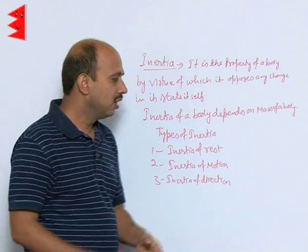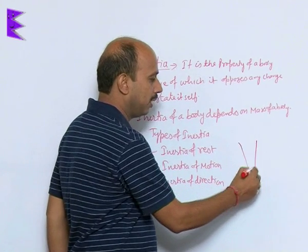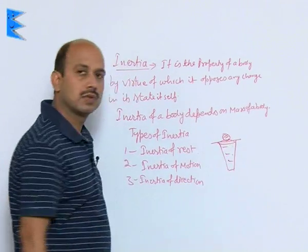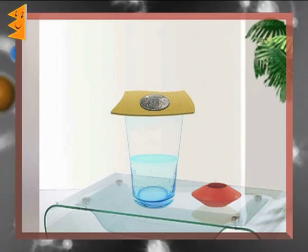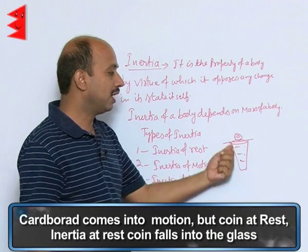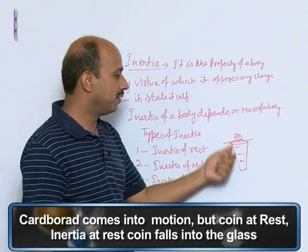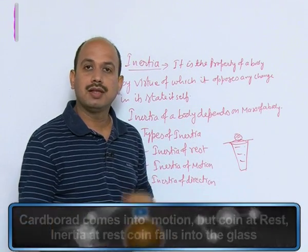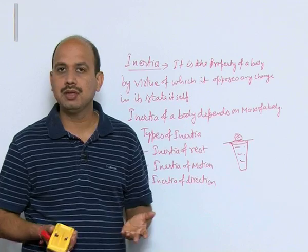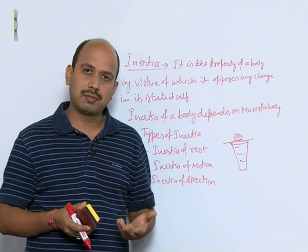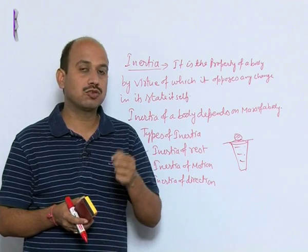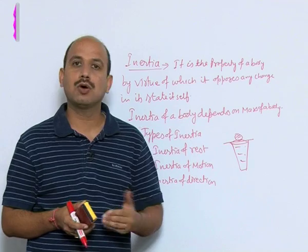You can do these simple activities yourself. Suppose you take a glass tumbler filled with water, place a cardboard on top, and place a coin over it. If you pull the cardboard very fast, the coin will fall into the water. The cardboard comes into motion, but the coin tries to remain at rest due to inertia of rest. Another example: if you shake your shirt or carpet, dust particles come out because the shirt comes into motion but the dust particles try to remain at rest, and so they get detached.